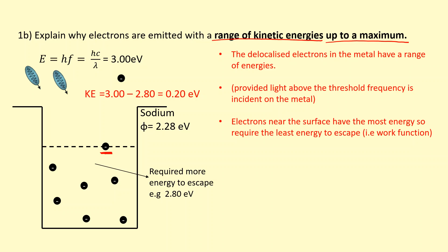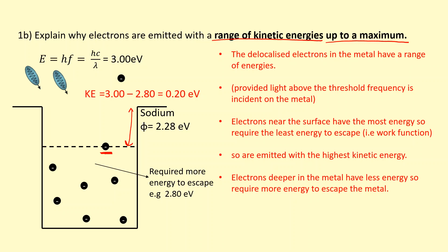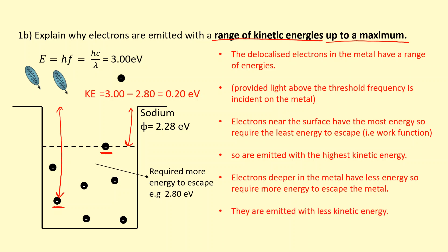The work function is the minimum energy needed to escape, so the surface electron comes out with the maximum kinetic energy. But electrons deeper inside the metal require slightly more energy because they have less energy to begin with — they require the work function plus a bit extra. So they come out with a lower kinetic energy.